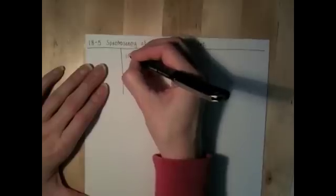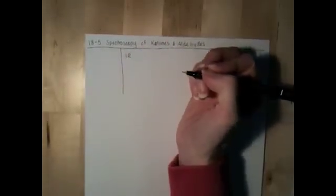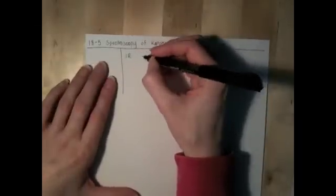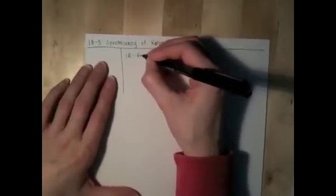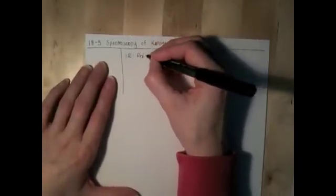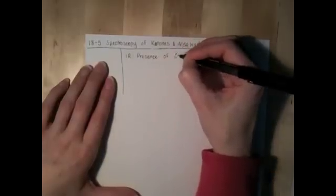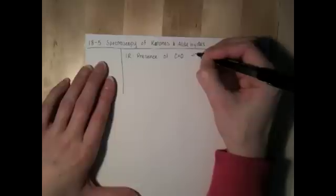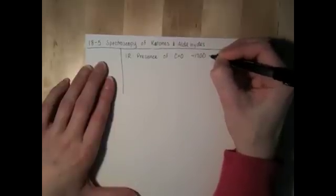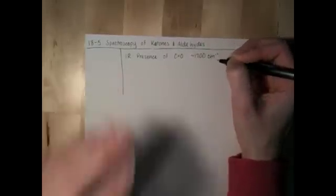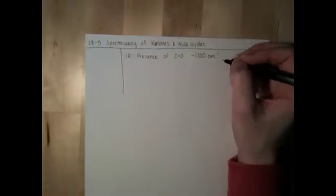For IR spectroscopy, for both ketones and aldehydes, we see the carbonyl peak very easily detected at about 1,700 wavenumbers, depending on what kind of substituents might be attached to the carbonyl group.